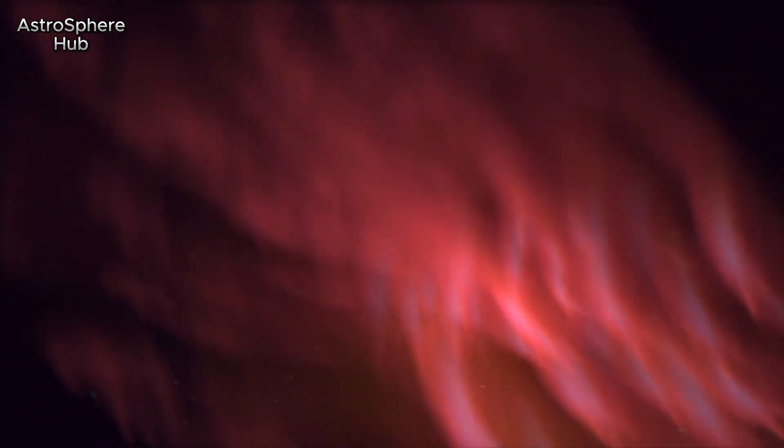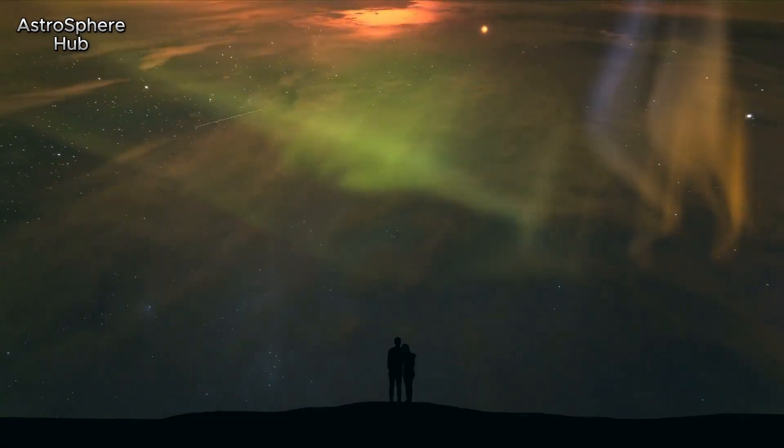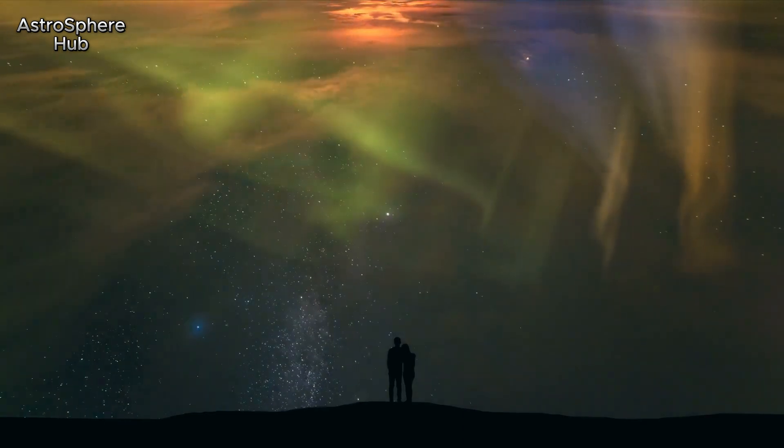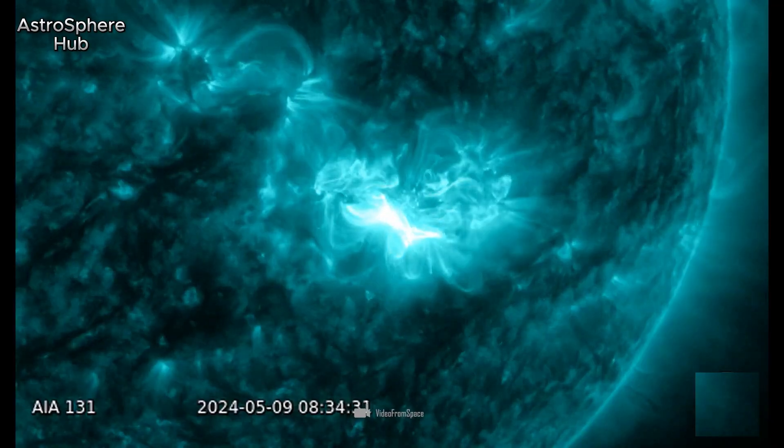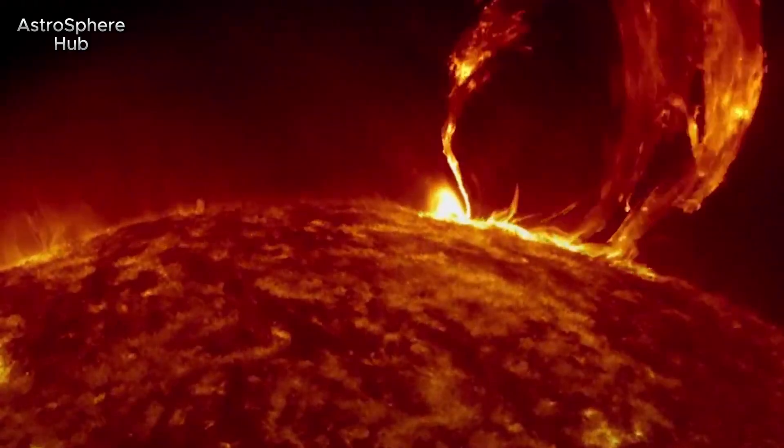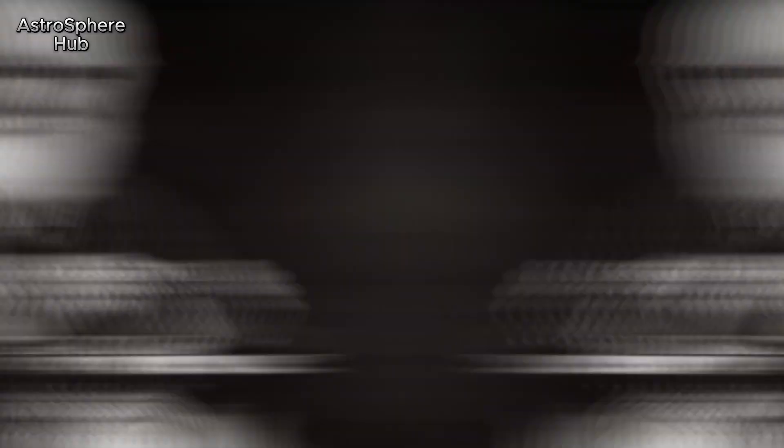When large amounts of particles hit the Earth's magnetic field, the magnetic field can collapse, and then the particles from the sun reach the lower regions, creating auroras in regions that do not normally see this phenomenon.